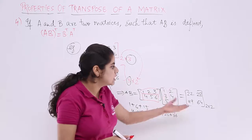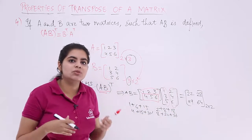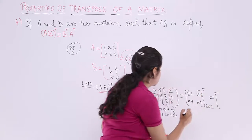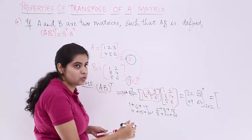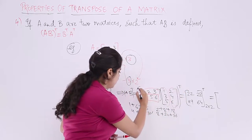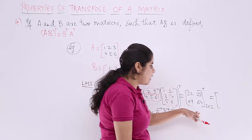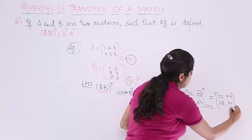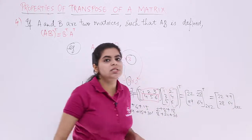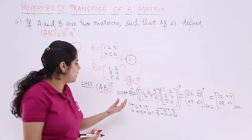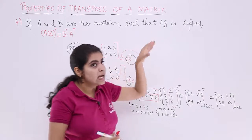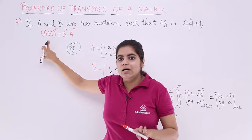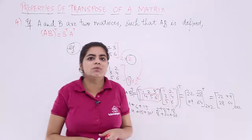The transpose is simple — rows become columns and columns become rows. So AB whole transpose = [22, 49; 28, 64]. The left-hand side is complete. What remains is to compute B transpose times A transpose for the RHS.